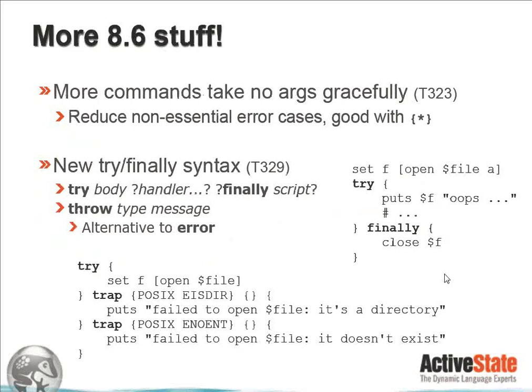A lot more commands have been changed to take no args gracefully. This was done to reduce non-essential error cases and was precipitated by the addition of the expansion operator — the curly braces with the star — in 8.5, which made it much easier to create code that would potentially error if you had no arguments passed in. Those were non-essential error cases. If you look at TIP 323, there's a full list of the commands that have been reduced from making errors to just quietly ignoring no args.